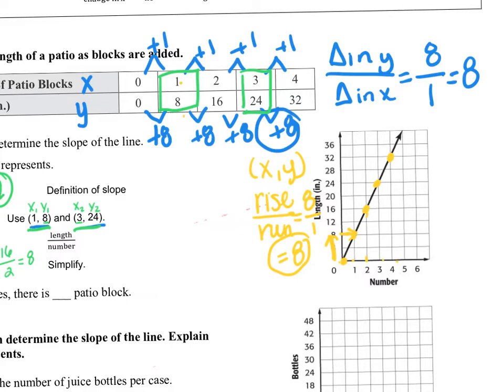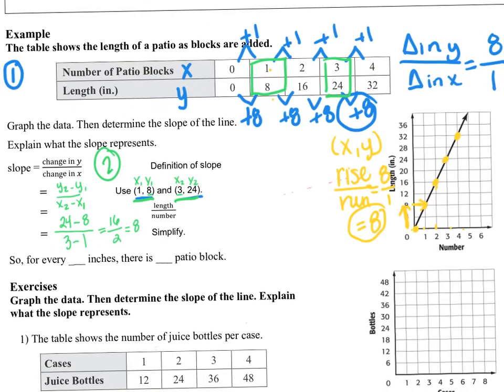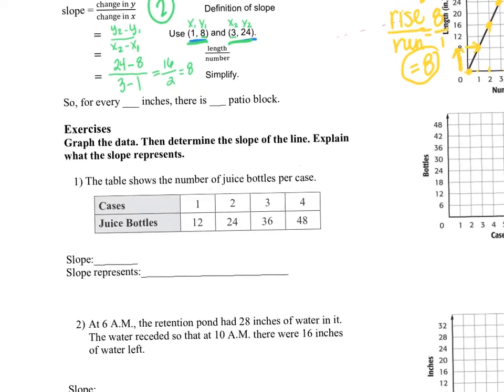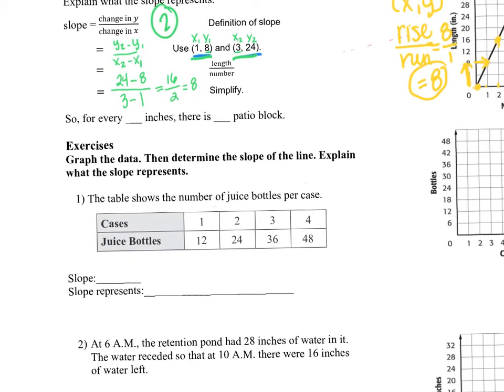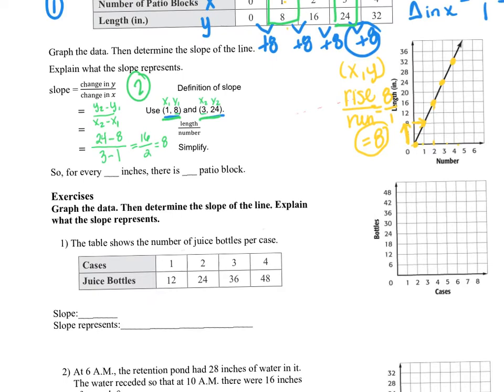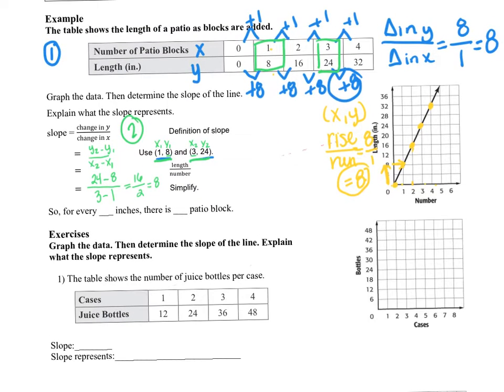So every way it worked, it took us to that same outcome. So 8. So let's look at the last part, and we're going to read through it. We're going to say, so for every blank inches, there is blank patio blocks. So for every, what's the 8 coming from? It's the inches. So for every 8 inches, there is one patio block. How do you feel about that? Not too bad, right?